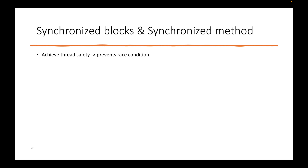The synchronization mechanism comes into the picture because we want to achieve thread safety and in turn prevent race conditions, as we discussed in the previous video. We want to prevent the situation where multiple threads try to manipulate a shared variable so that we do not get any wrong or incorrect result.